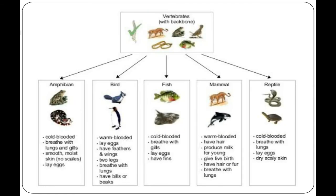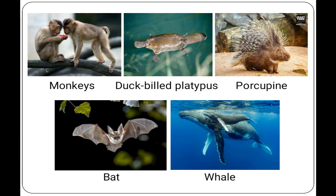The next group is mammals. Bats, whales, elephants, and human beings all belong to a group of warm-blooded vertebrates called mammals. Mammals have hair or fur on their bodies, and their young are fed on milk produced by the mother's mammary gland. All mammals except the duck-billed platypus and the spiny anteater reproduce by giving birth to live young. The bat is the only mammal that can fly. Examples include monkeys, bat, whale, dog, cow, duck-billed platypus, human being, and porcupine.